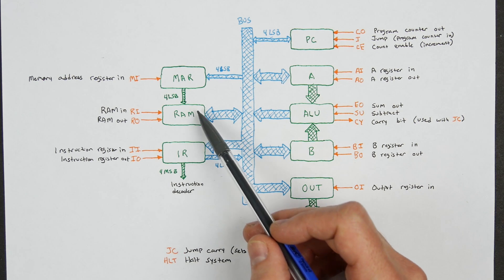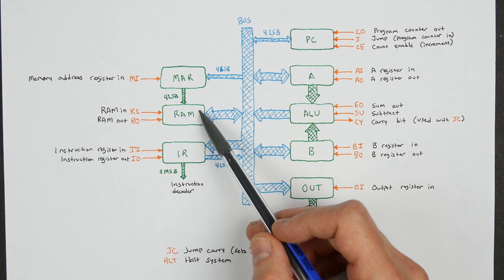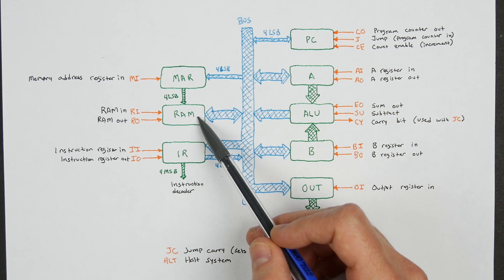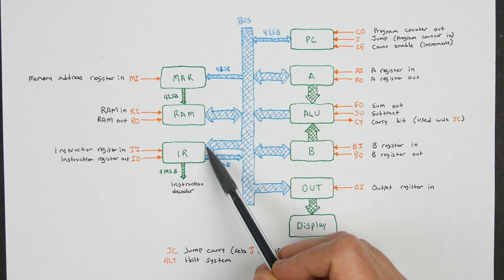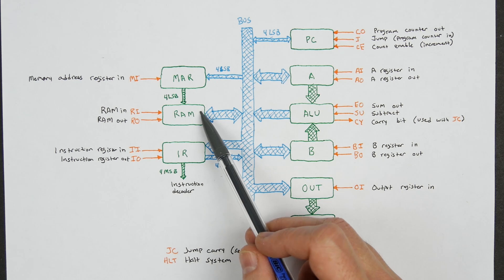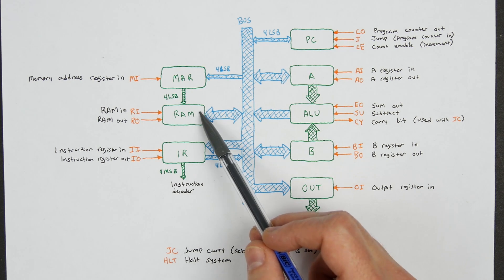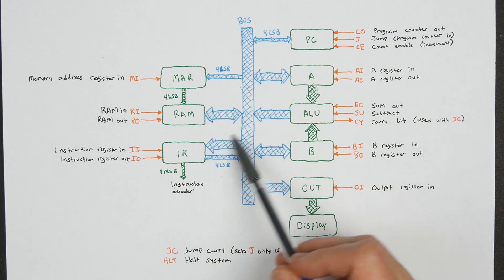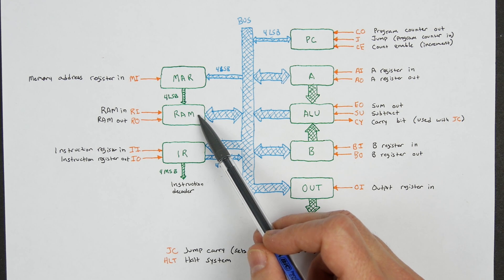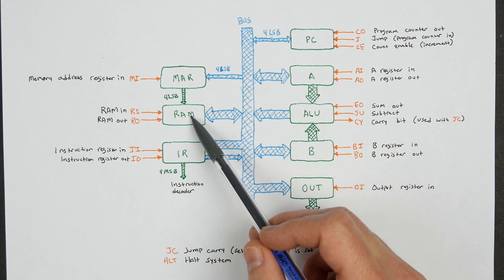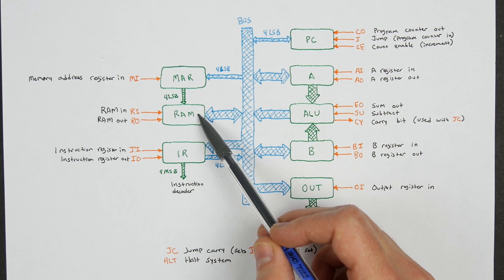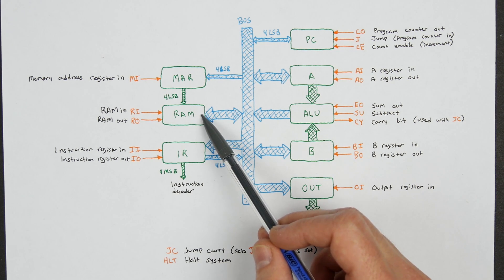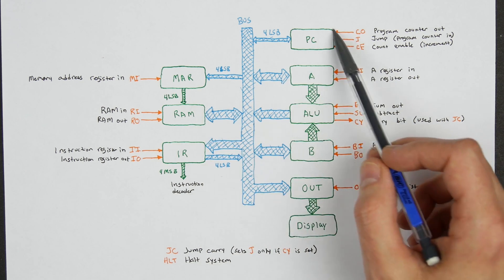Whenever we're running a program on our computer, the program is stored in RAM as a list of instructions. In order to execute each instruction, we have to fetch it from RAM. In the 8-bit computer that we're building, a program will normally start at address 0, fetch and execute that instruction, then go to address 1, 2, 3, and so on. We need a way to keep track of which address we're on, and the way we do that is with the program counter.